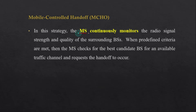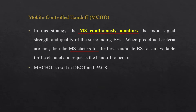In MCHO, the mobile station continuously monitors the radio signal strength and quality of surrounding base stations. When predefined criteria are met, the mobile station checks for the best candidate base station for an available traffic channel and requests the handoff. The handoff decision is taken by the mobile station. This kind of handoff is used in DECT and PACS standards, but it is not very useful as there is a lot of burden on the mobile station.